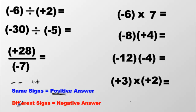If the signs are different — that means one is a negative and one is a positive — a good guy hanging out with a bad guy clearly won't get along, and they will not enjoy being in one another's company. So the mood will be very negative.